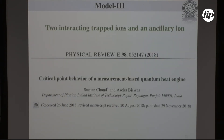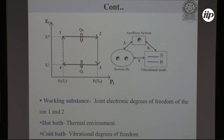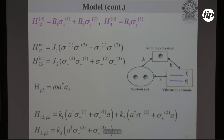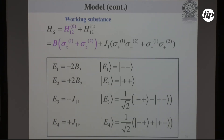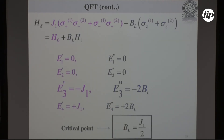Our third model uses three trapped ions to study the effect of a third auxiliary ion on the working substance of the two-ion system. The auxiliary ion is coupled to the two-ion system, and we investigate how this coupling affects engine performance. We also examine a critical point in the Hamiltonian where there is no predefined ground state as the eigenvalue is varied, and we find that projecting the system onto the ground state at this critical point enhances the engine efficiency.